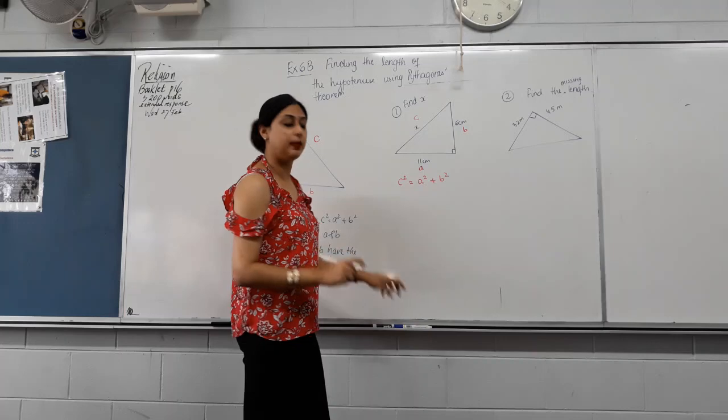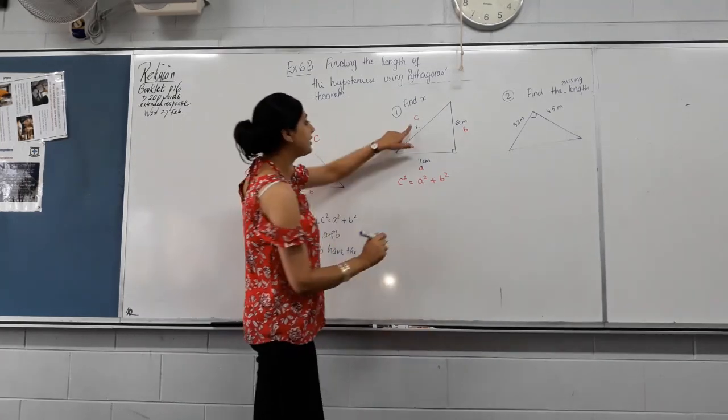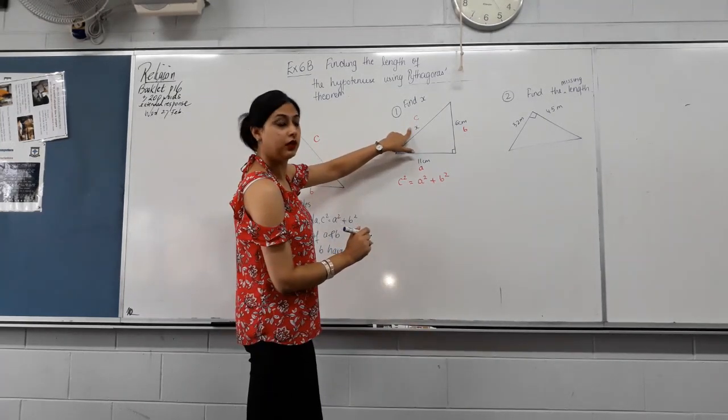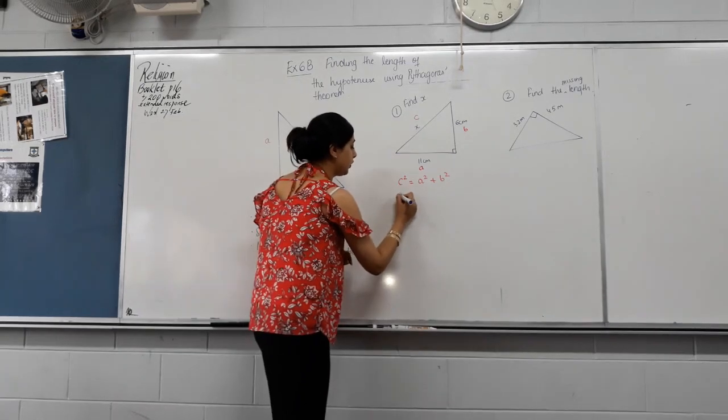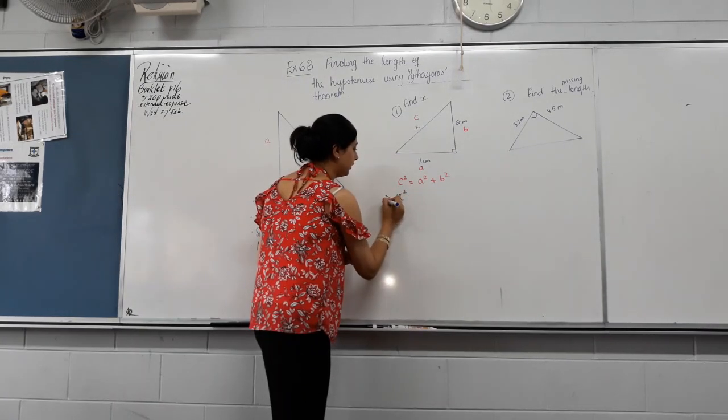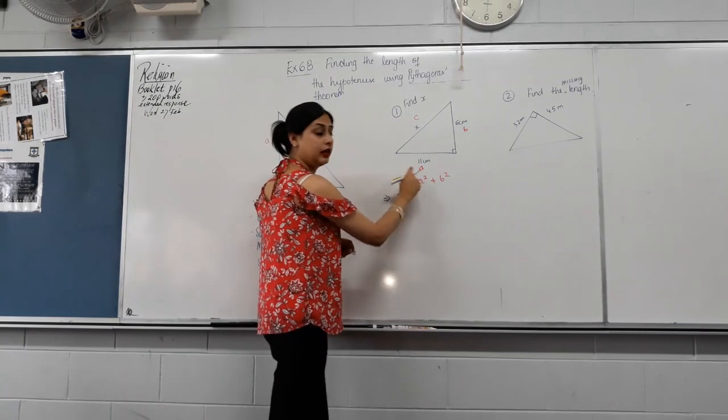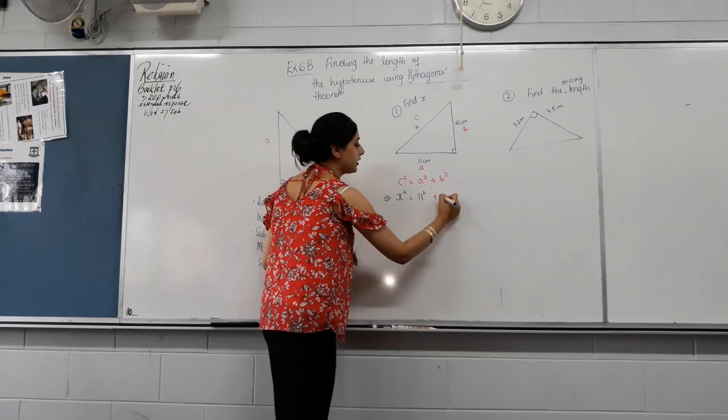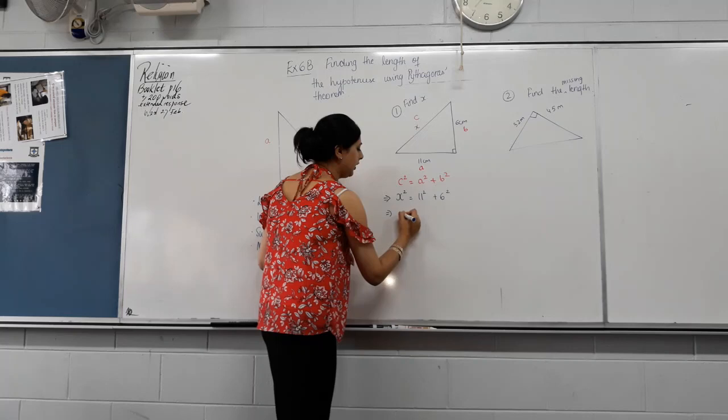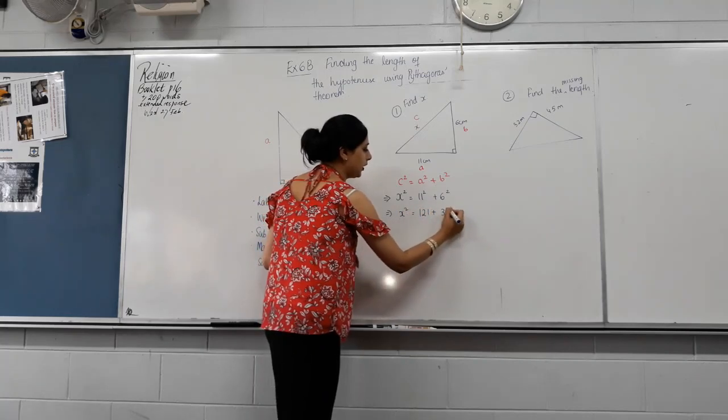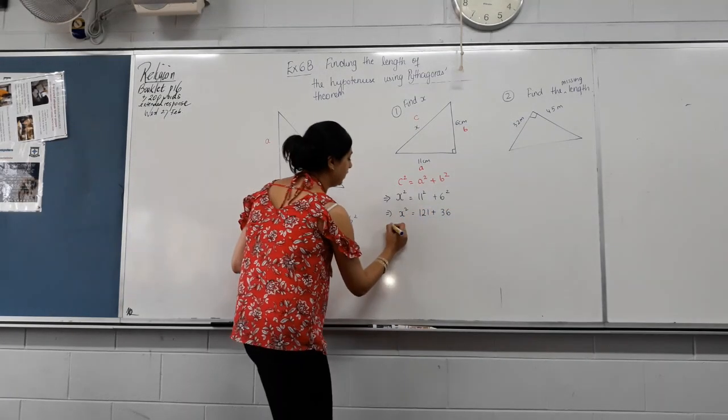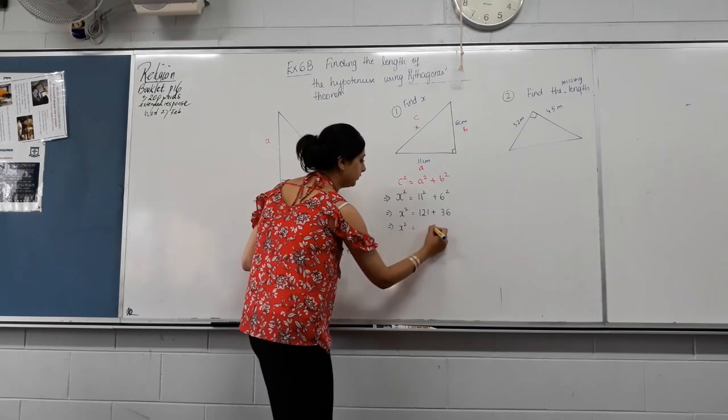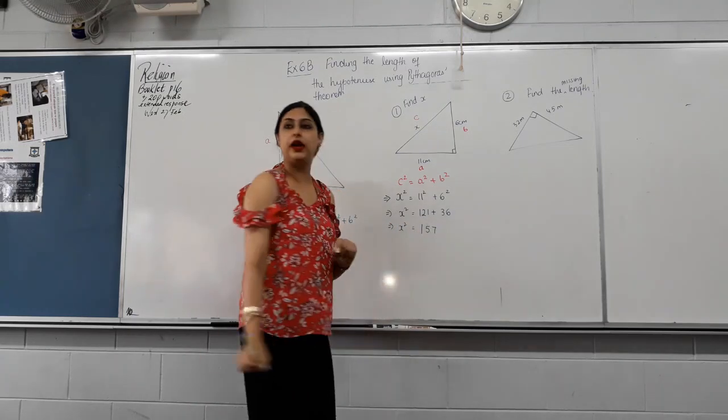Sub in the numbers. Now, what is C equal to? X. So C squared becomes X squared. What's A? 11 squared. So yeah, we write 11 squared. And B is 6 squared. You should know what 11 squared is equal to. What's 6 squared equal to? 36. So we add them.